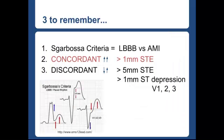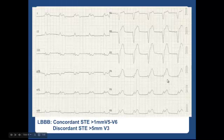The Sgarbosa criteria help us distinguish between a left bundle branch block and an acute MI. Here's a quick summary of all three criteria.